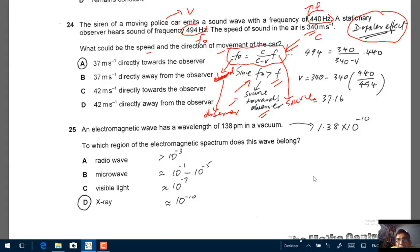Then you need to plug in the numbers. F naught is 494, C is 340, V is what we're trying to find, and F is 440. Just use a calculator and you'll work out V as 37.16 meter per second. Therefore, correct response is A, 37 meter per second directly towards the observer.